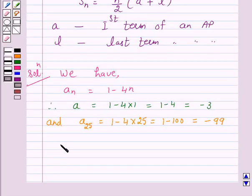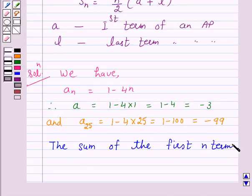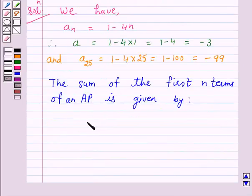This is equal to 1 minus 100, which is further equal to minus 99. Now according to our key idea, we have the sum of the first n terms of an AP is given by Sn equals n over 2 into a plus l.